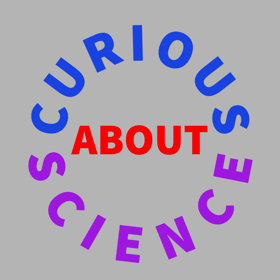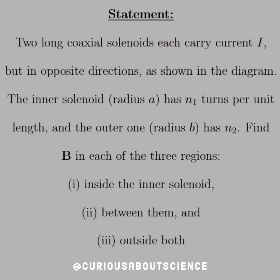Alright, we've got a quick problem, so let's jump in. The statement reads: two long coaxial solenoids each carry current I, but in opposite directions, as shown in the diagram.